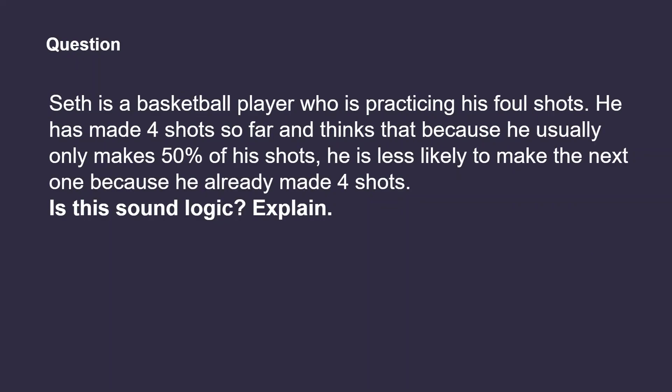Seth is a basketball player who is practicing his foul shots. He has made 4 shots so far and thinks that because he usually only makes 50% of his shots, he is less likely to make the next one because he already made 4 shots. Is this logic sound? Explain.